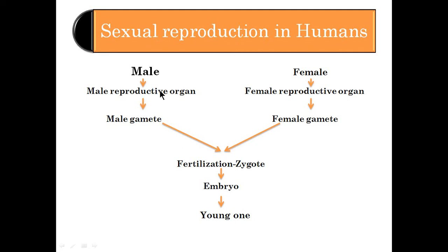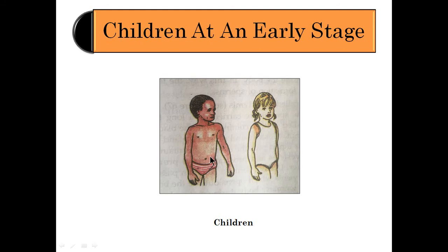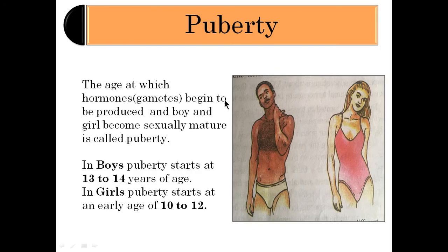But do you think that these reproductive organs are active from birth itself? When babies are born they are very small, and it's difficult to identify male and female because they almost look similar. Then their growth starts — weight increases, height starts increasing — and slowly they reach a stage where different types of changes start taking place in the body. This is known as the age of puberty.